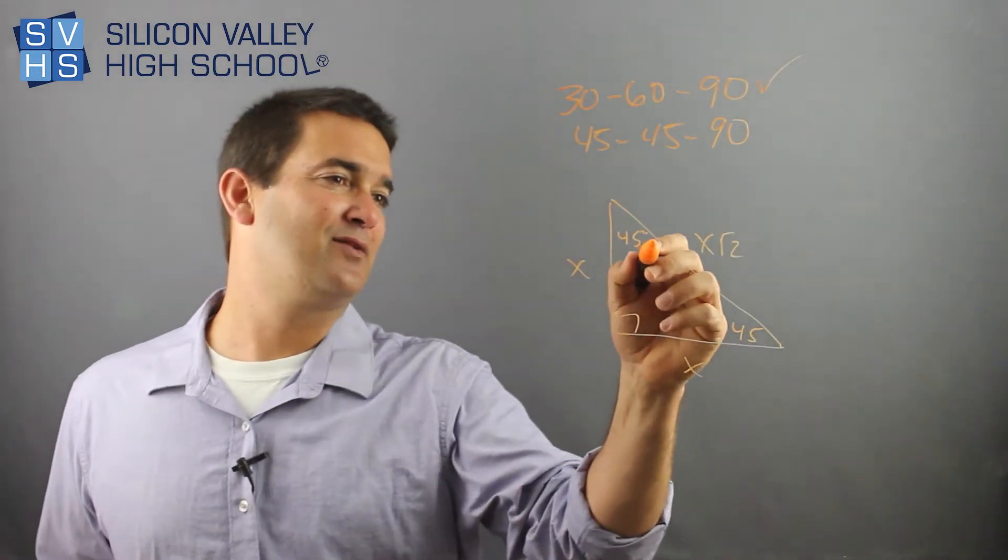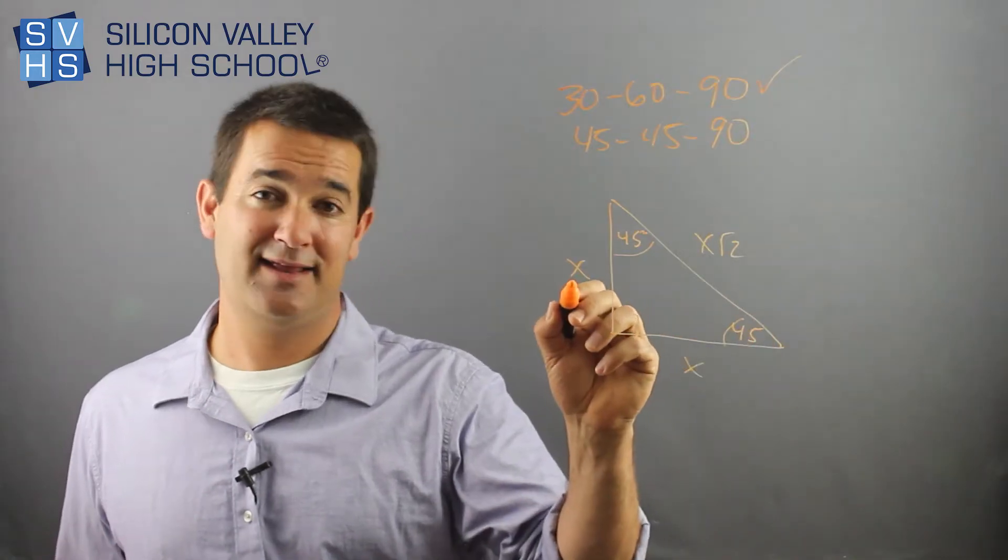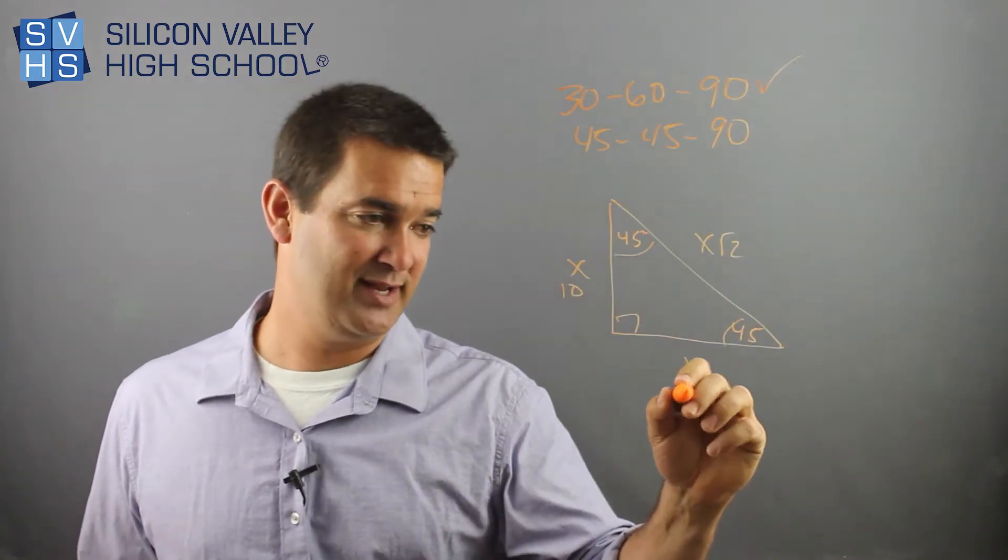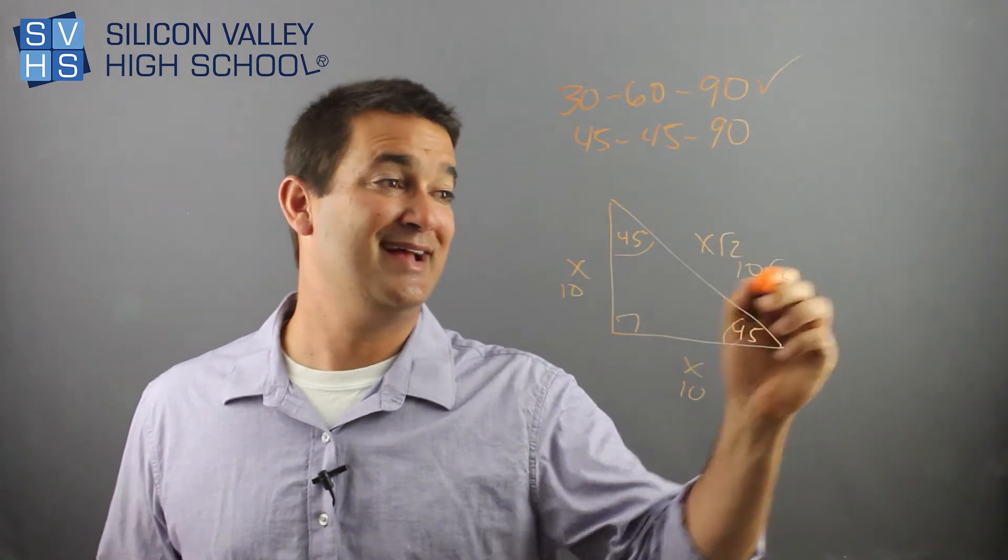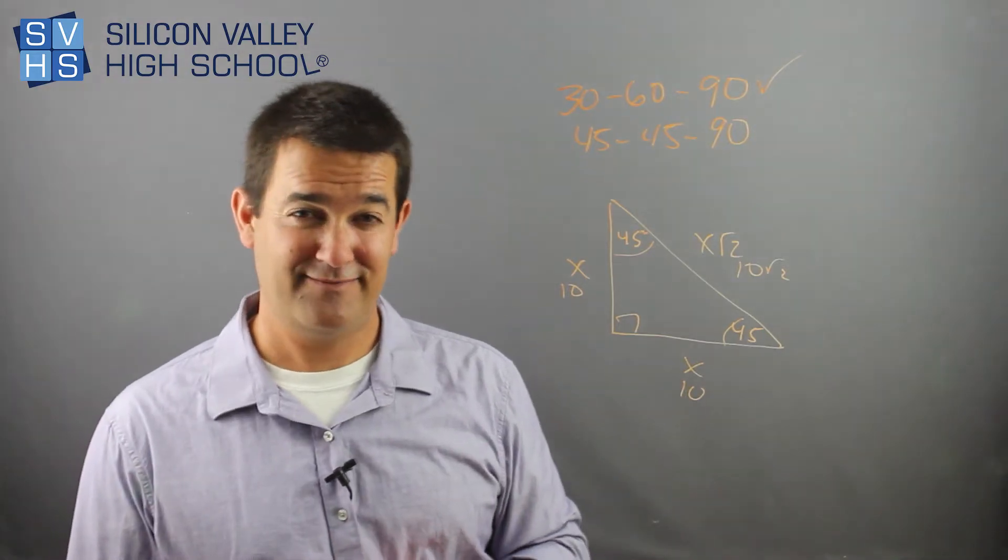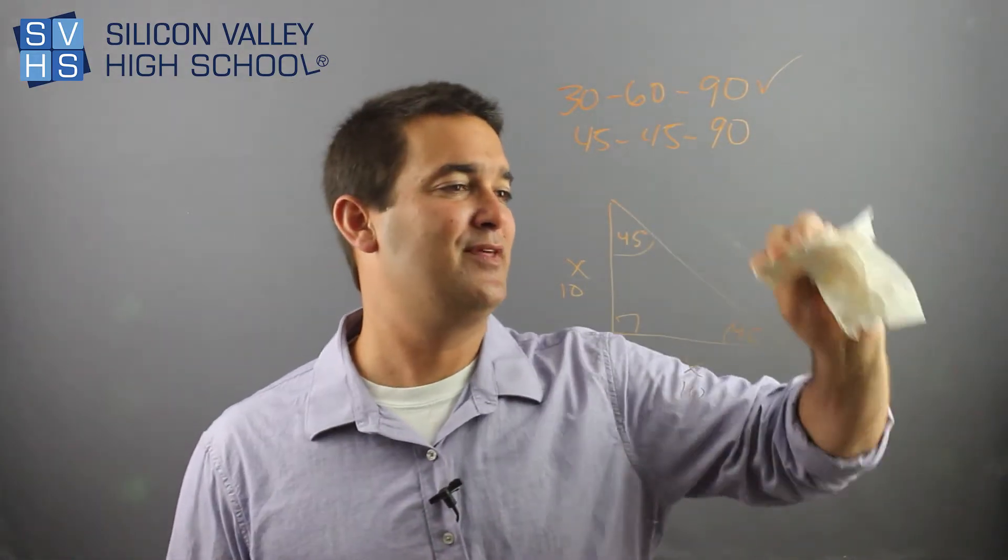So kind of like the other one, if I knew that this was 10, well then he's 10 and he's 10 root 2. It's that easy for the 45-45-90. Now let's play with it.